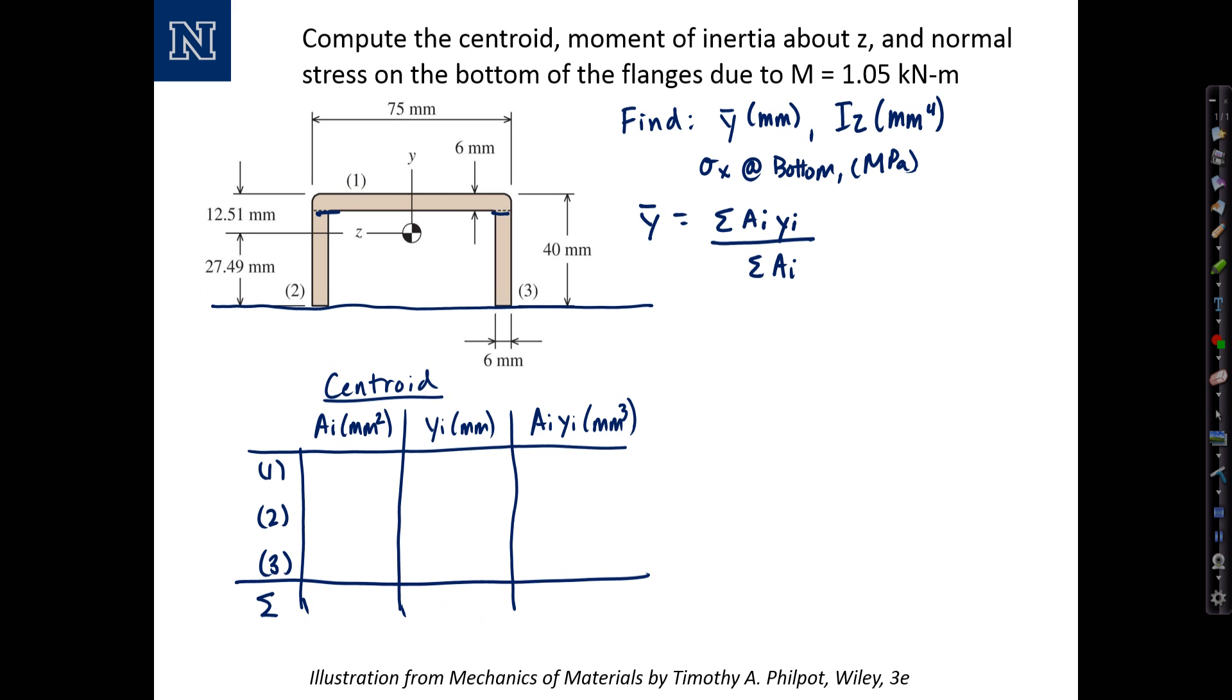Starting with section one here, this area on the top has a length of 75 and a thickness of six. So 75 times six is 450 millimeters squared.